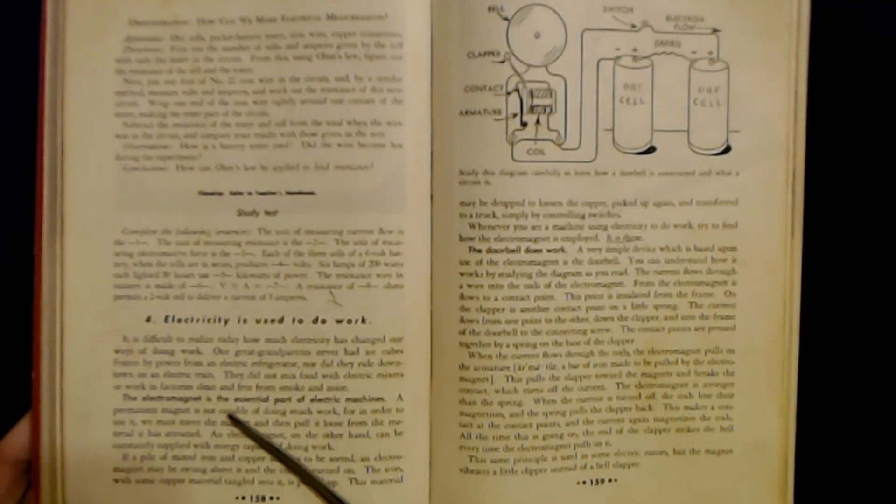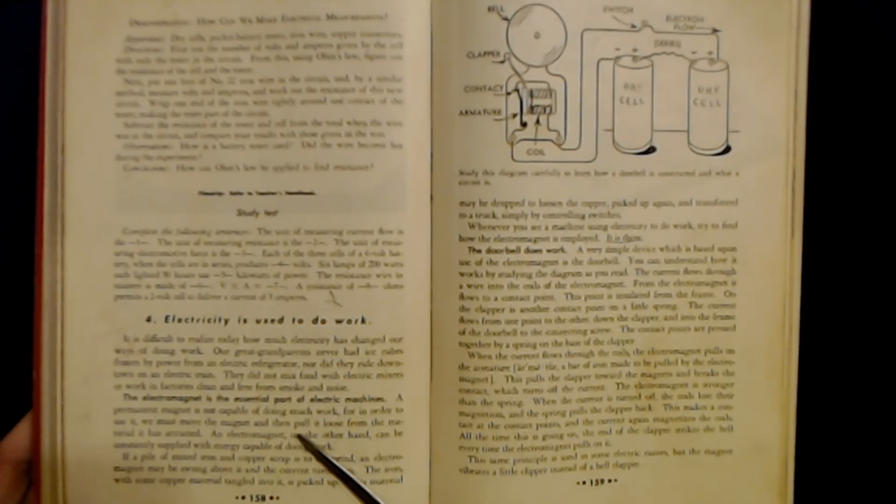The electromagnet is the essential part of electric machines. A permanent magnet is not capable of doing much work, for in order to use it, we must move the magnet and then pull it loose from the material it has attracted. An electromagnet, on the other hand, can be constantly supplied with energy capable of doing work.